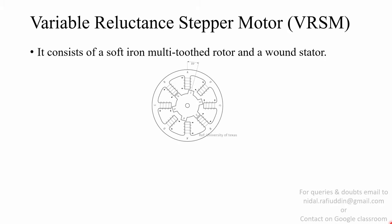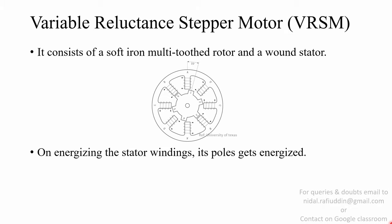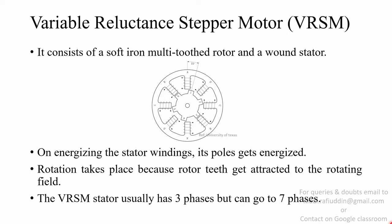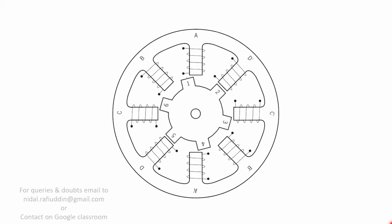The VRSM consists of a soft iron multi-tooth rotor and a wound stator. On energizing the stator winding, its poles get energized and rotation takes place because rotor teeth follow the low reluctance path and get attracted to the rotating field. The variable reluctance stepper motor stator usually has three phases but can go up to seven phases. If a pulse is given to windings A and A-dash, the rotor moves to shorten the air gap with both A and A-dash.